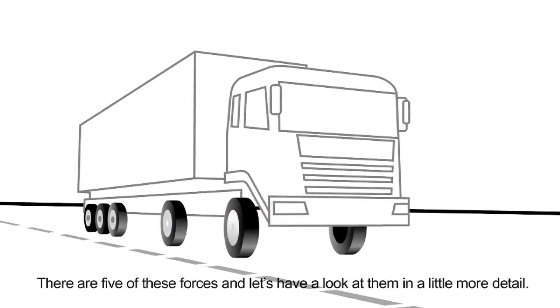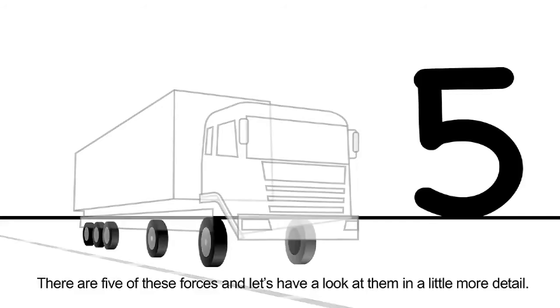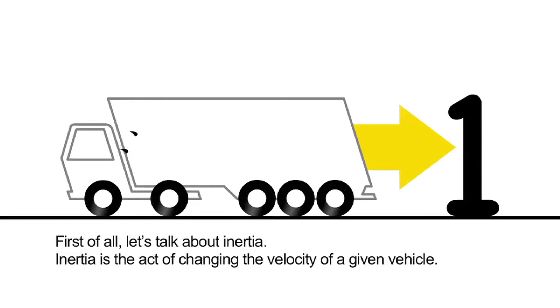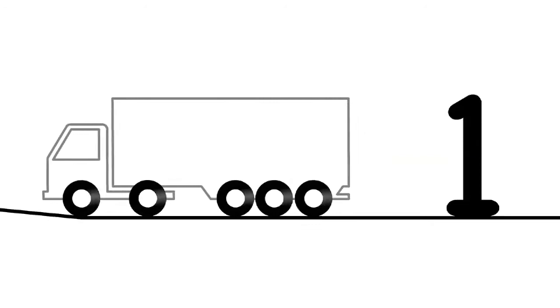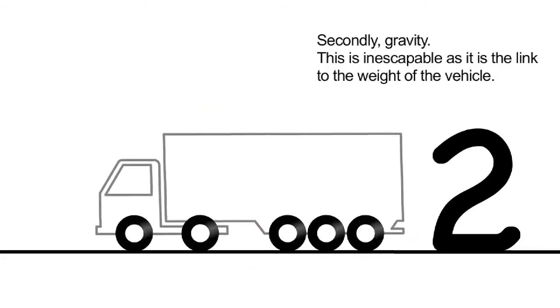There are five of these forces. Let's have a look at them in a little more detail. First of all, let's talk about inertia. Inertia is the act of changing the velocity of a given vehicle. Secondly, gravity. This is inescapable, as it is the link to the weight of the vehicle.